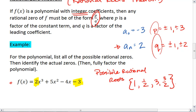So our possible rational roots are the set: 1, 1/2, 3, and 3/2, where all of these could be plus or minus. That's our final answer.